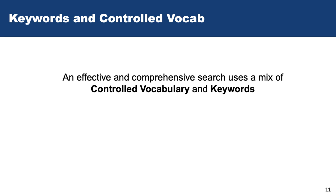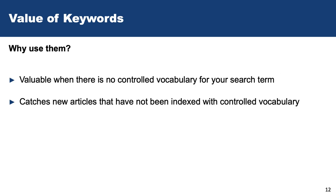MeSH is wonderful — it saves you time. You could just search using this controlled vocabulary, and I'll show you how to find it and use it. But if you're going to do a sophisticated, more involved search, I would say you want to use a mix of controlled vocabulary and keywords. There's a reason for that: sometimes there isn't controlled vocabulary, sometimes there is no MeSH for your term.